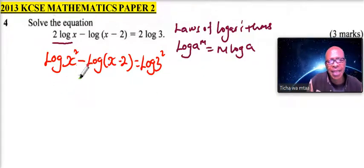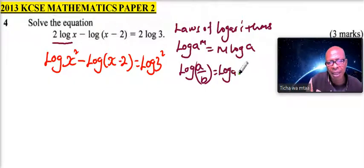Then there is a law where we say that if we have the logarithm of a over b together, this is the same as the logarithm of a minus the logarithm of b.